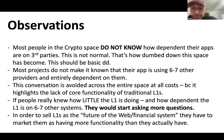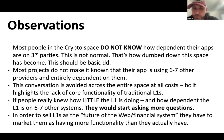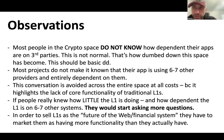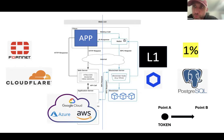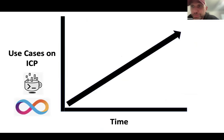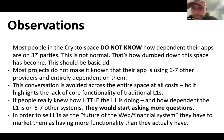If people really knew how little the layer one was doing and how dependent it is on six or seven other systems, they would start asking more questions. But in order to sell layer ones as the future of the web and the financial system, they have to market them as if they have more functionality than they actually have — apps on chain, agents on chain, so on and so forth. They're trying to sell people on this idea that layer ones are the solution for Web3, even though this entire model is a Web2 model that doesn't even solve for the problems of Web2.